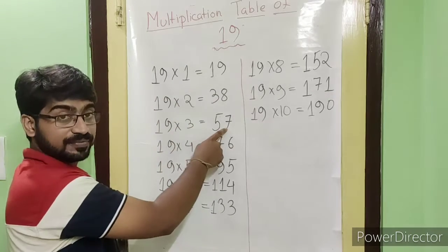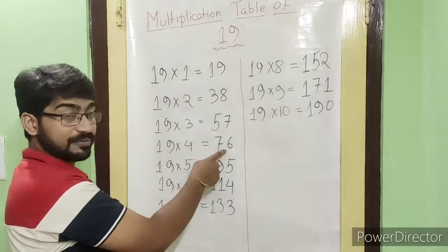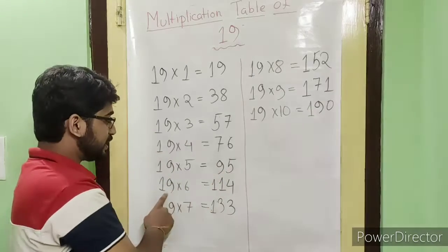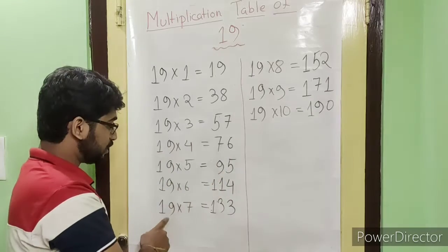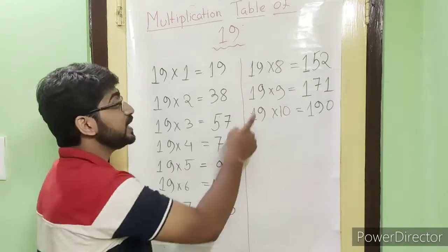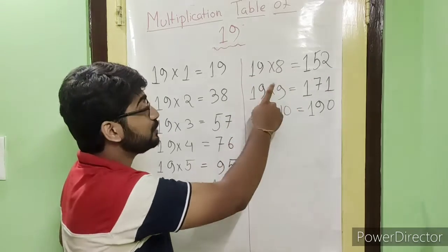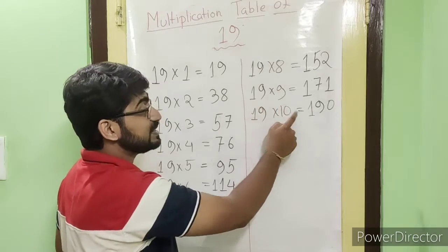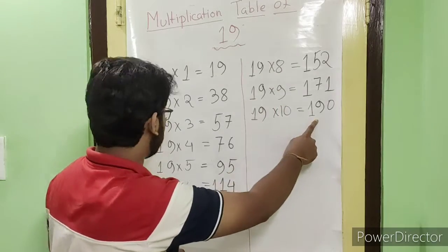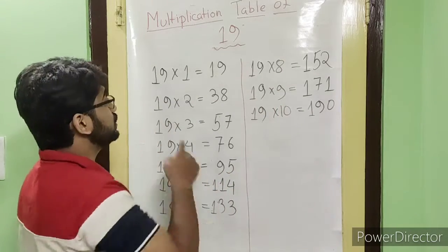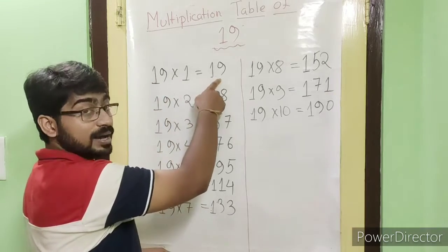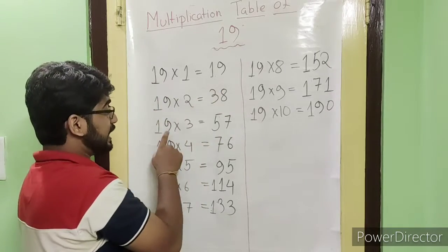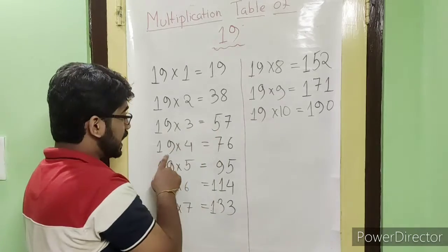19 threes are 57, 19 fours are 76, 19 fives are 95, 19 sixes are 114, 19 sevens are 133, 19 eights are 152, 19 nines are 171, 19 tens are 190.